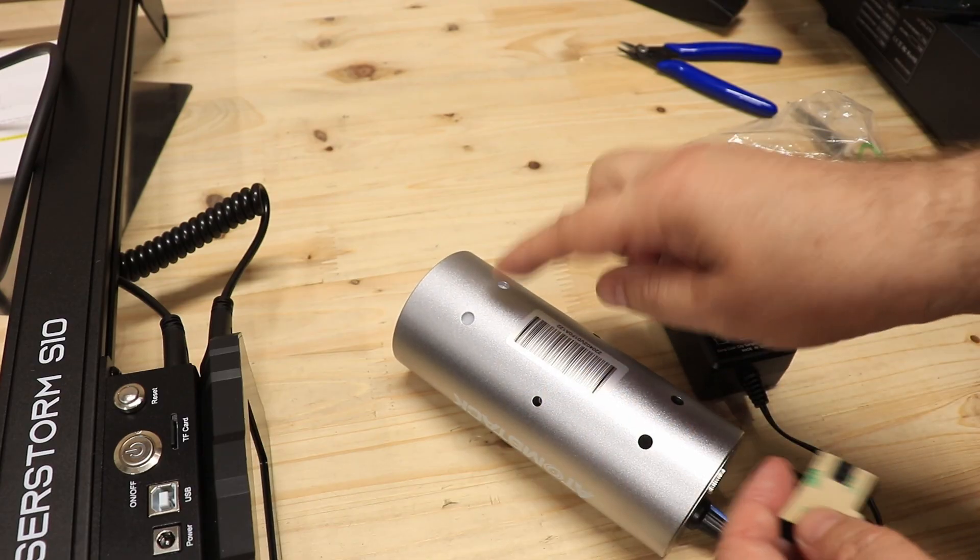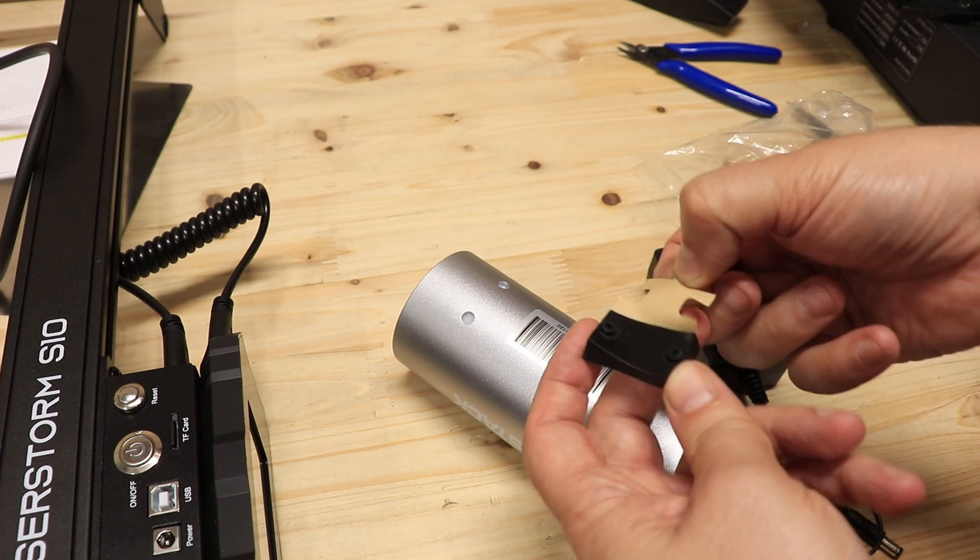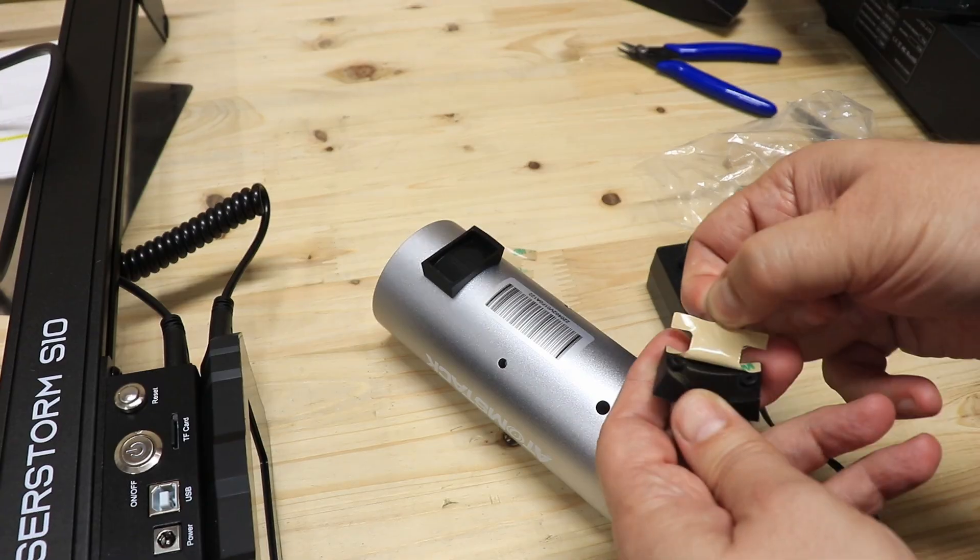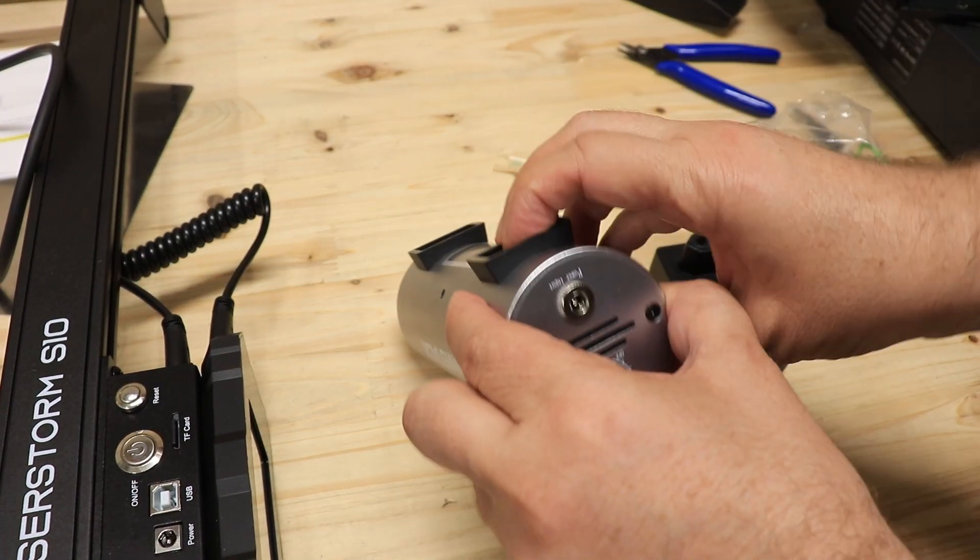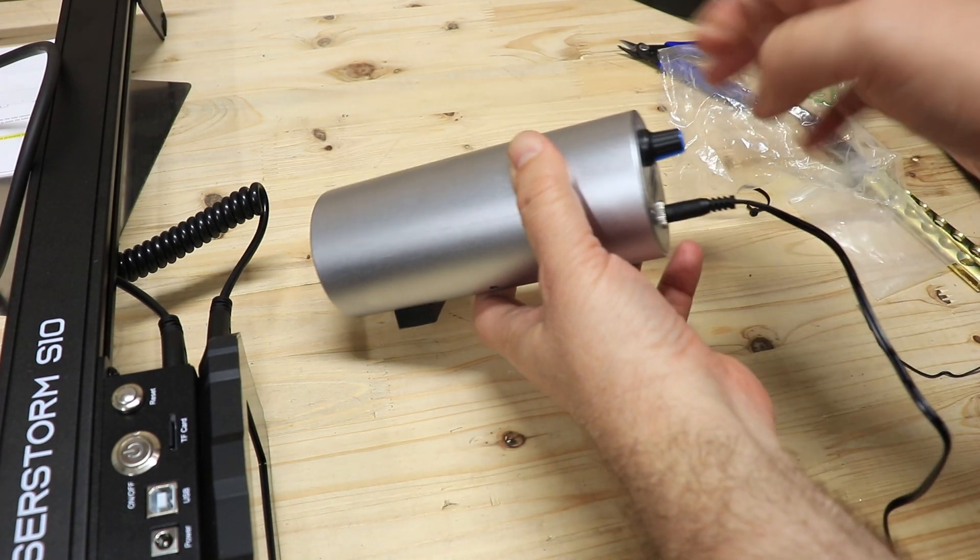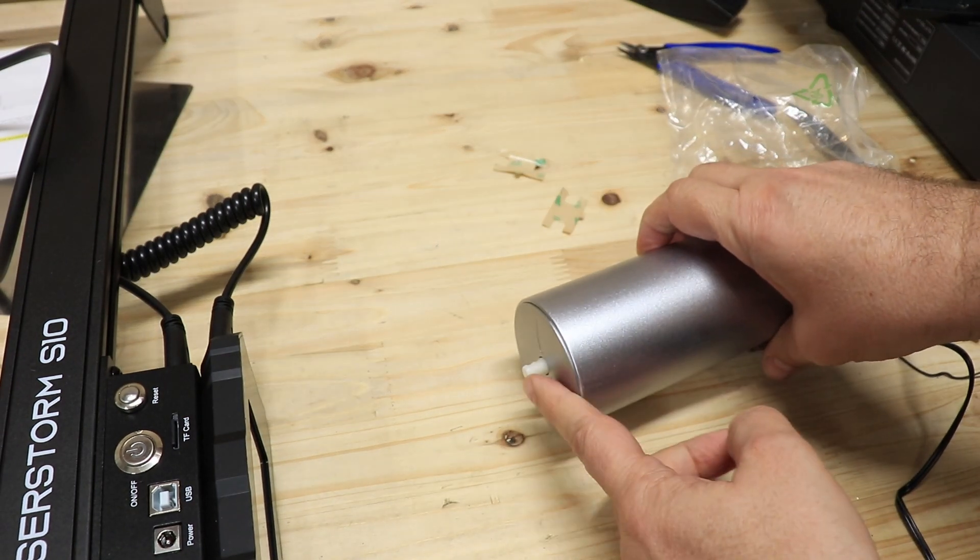So somehow I will zip tie to this cable holder or something like that. Now let's glue these legs to the air pump. And these are rubber legs. Let's plug in the power. And the pipe.